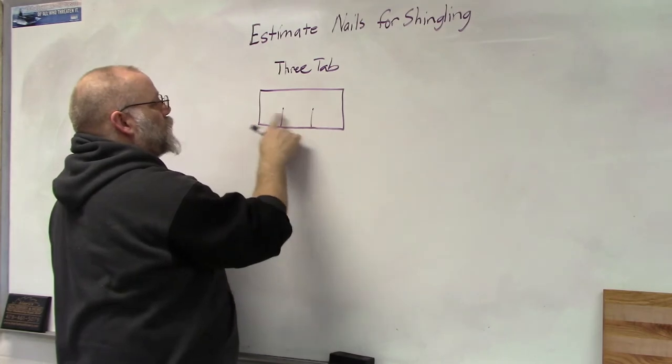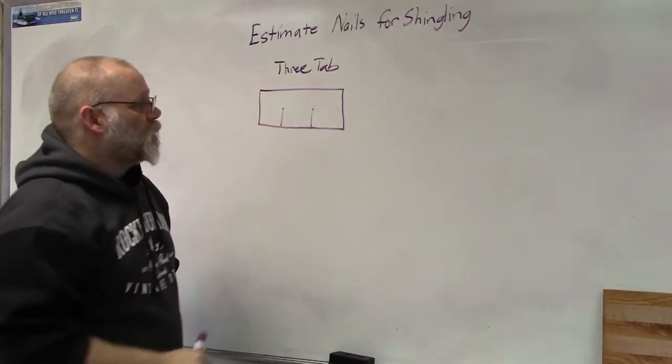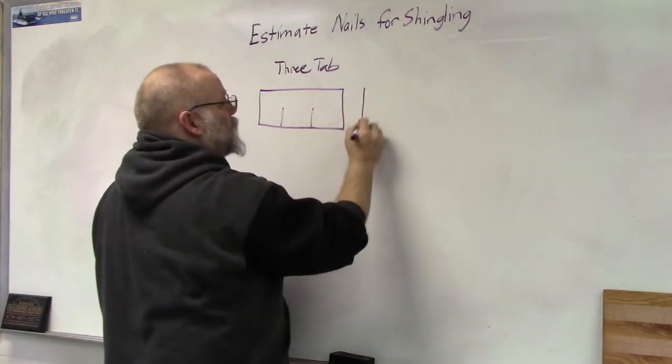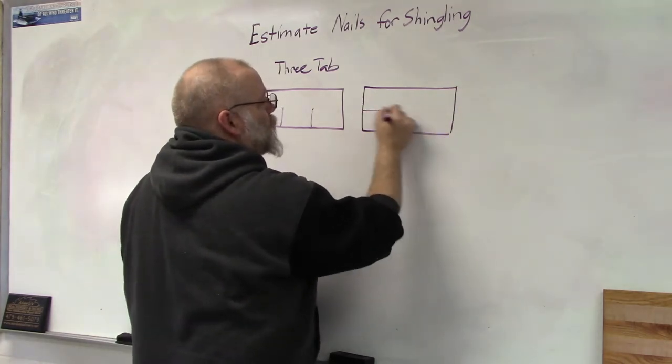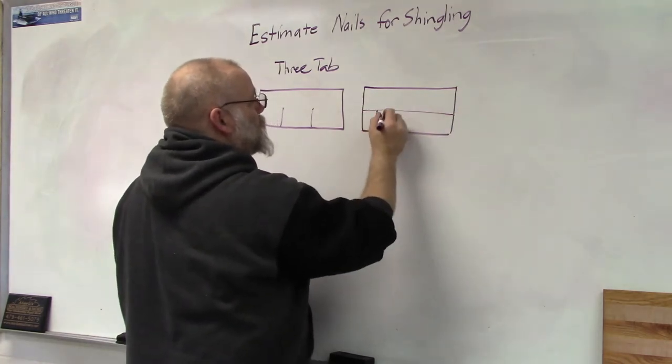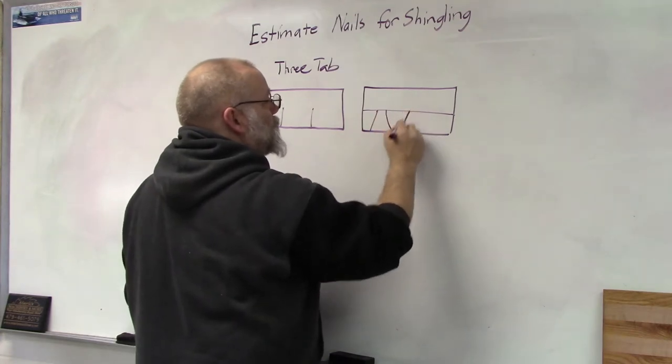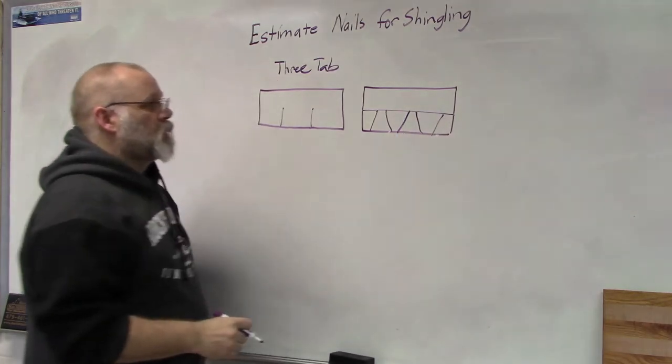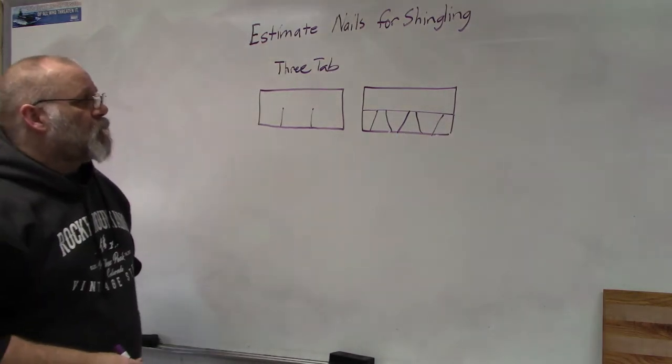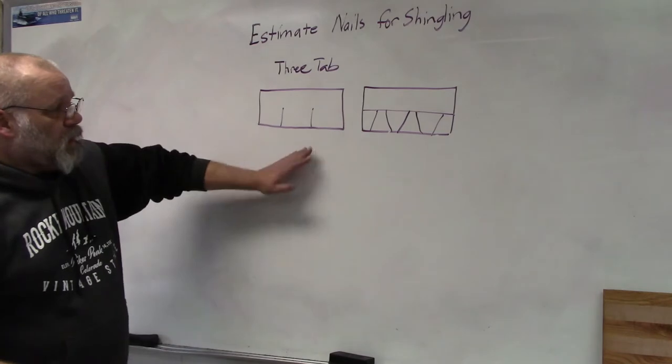...has three different tabs, two notches, and then we have the architectural shingle which is solid and then has these little flaps on here to give it some texture. Okay, so we'll start off with the three tab shingle.